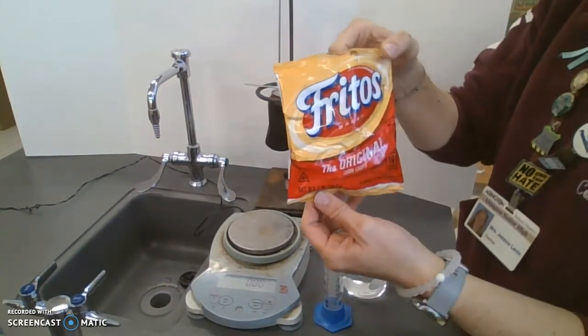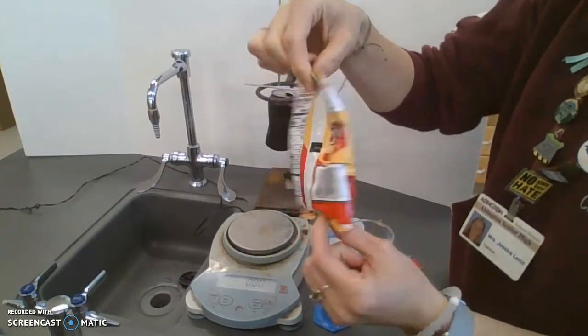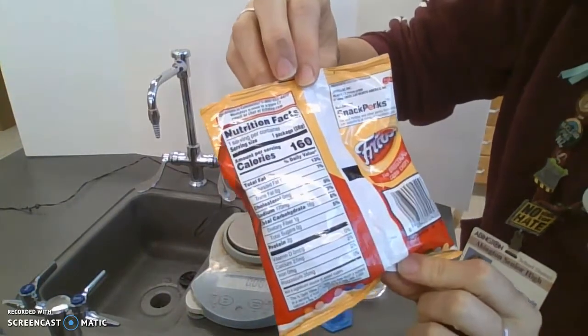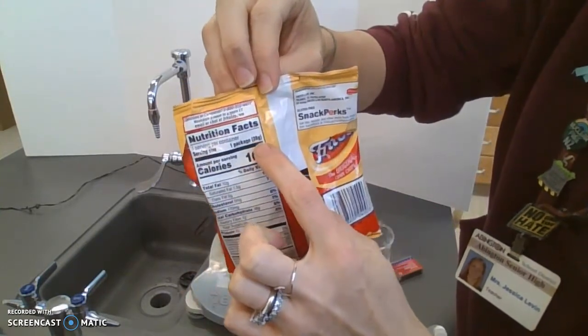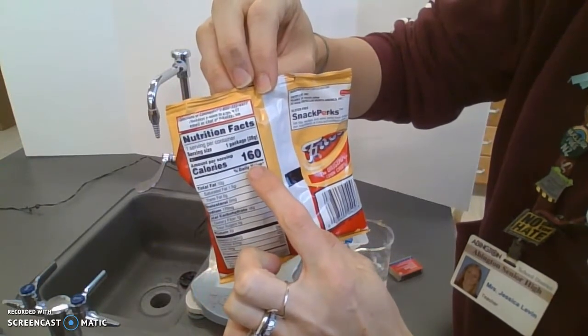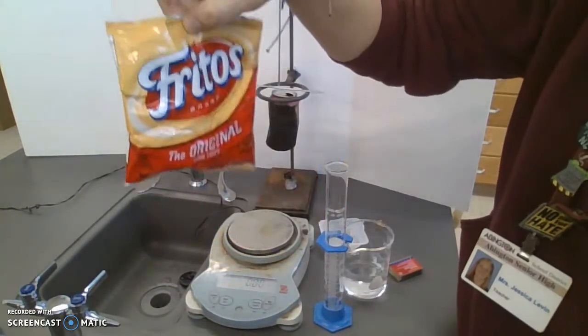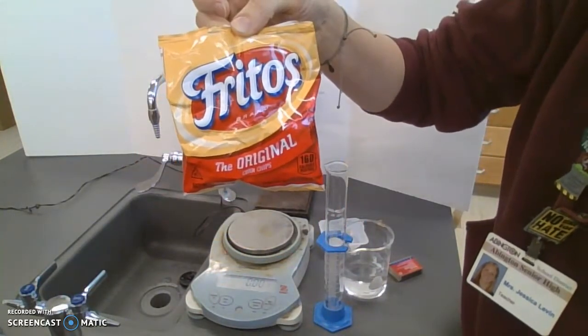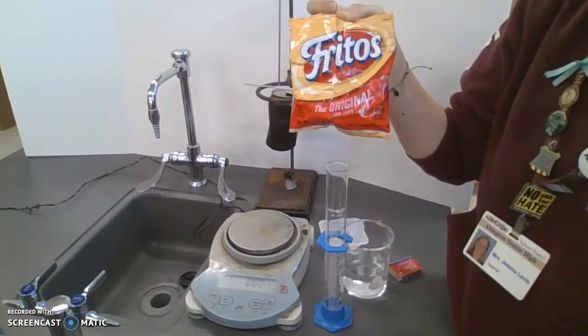So on your snack foods, you have these calories on the back side that tell you in the container that is 28 grams how many calories that is. We have 160 calories for this serving of Fritos. We're going to check and see how many calories that actually is.